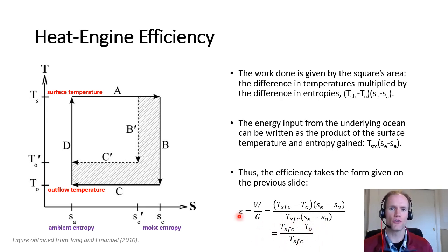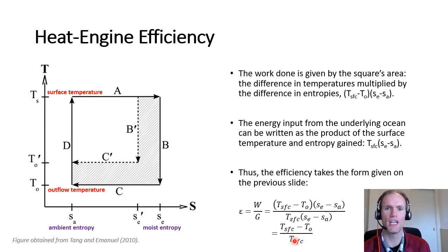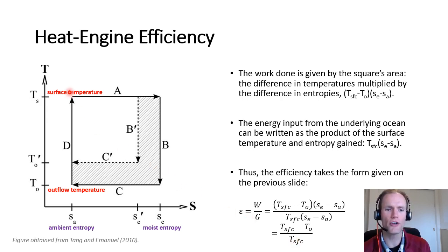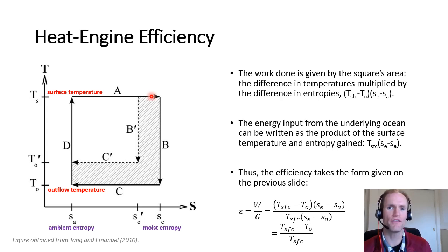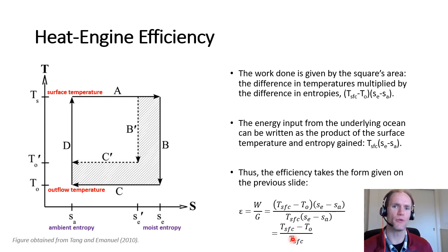In the scientific literature, efficiency is sometimes written with the surface temperature in the denominator, and other times with the outflow temperature in the denominator. The difference arises from additional heat gained through dissipation of turbulent energy along the inflow leg A, leading to a larger energy input. Working through the math, this gives an efficiency with the outflow temperature in the denominator, which is higher since outflow temperature is lower than surface temperature — typically on the order of 0.3 to 0.5 rather than 0.25 to 0.4.